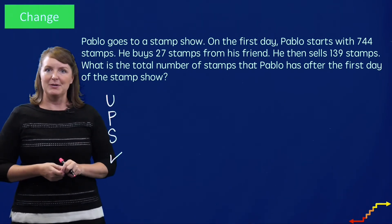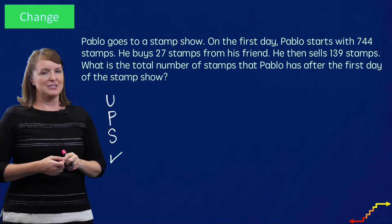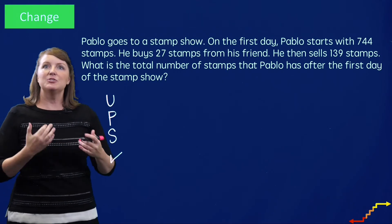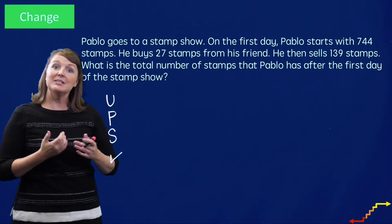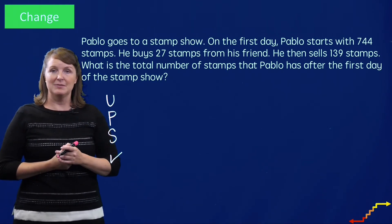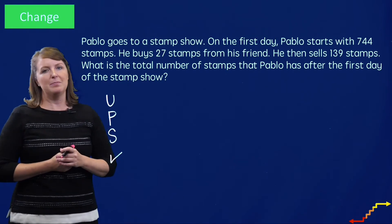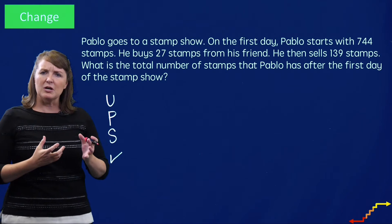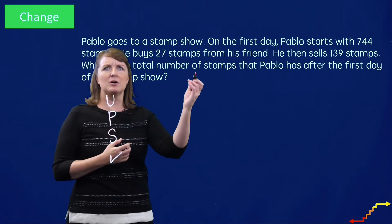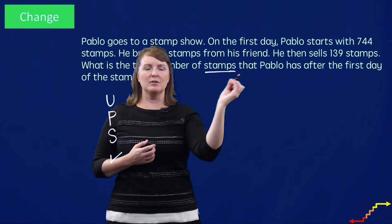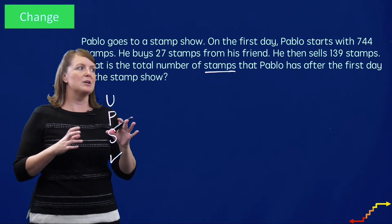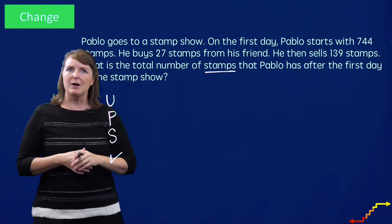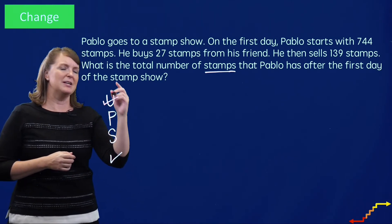Let's understand the problem by reading it: Pablo goes to the stamp show. On the first day, Pablo starts with 744 stamps. He buys 27 stamps from his friend. Then he sells 139 stamps. What is the total number of stamps that Pablo has after the first day of the stamp show? So what are we focused on in this story? Stamps. I'm going to underline 'stamps' to help us focus on the numbers that deal with stamps, and I have to figure out the total number Pablo has after the first day.